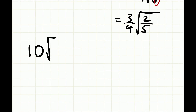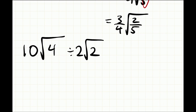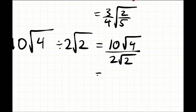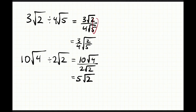Let's pick an example where we can simplify. Say we have 10√4 divided by 2√2. We write it as a fraction: 10√4 over 2√2. We simplify: 10 divided by 2 is 5, and 4 divided by 2 is 2, so we just end up with 5√2.